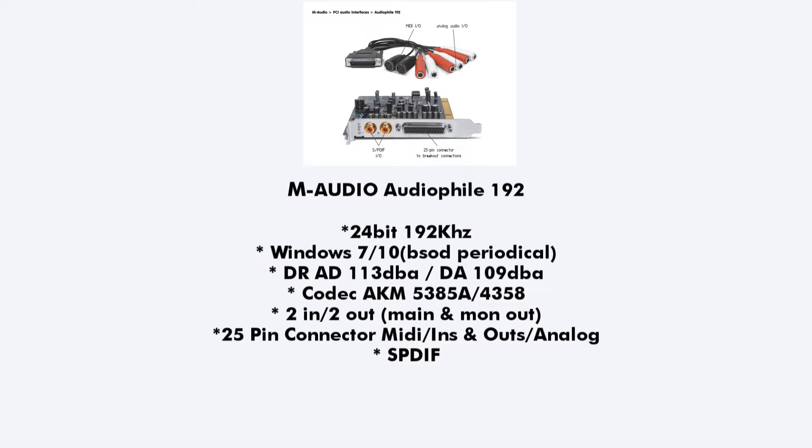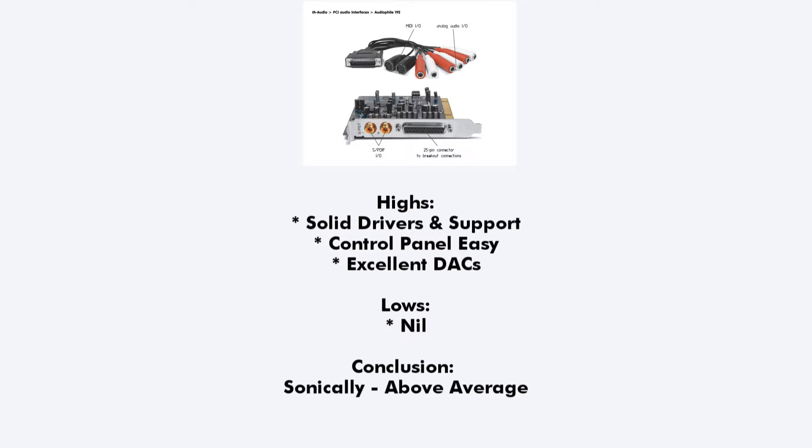The codecs are the AKM 5385A and 4358 — the same ones used on the ESI Julia card. It's two in, two out, with one main output pair and one monitor output pair. SPDIF is on the back panel, and MIDI and quarter-inch analog jacks are on the cable. Pros: solid drivers and support, good control panel. This card is significantly clearer than the 2496 with better DACs. Sonically this one is definitely above average — definitely worth picking up over the 2496 in terms of sound quality.